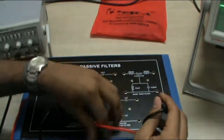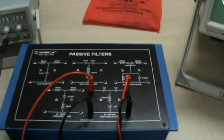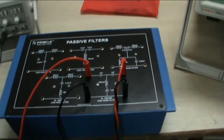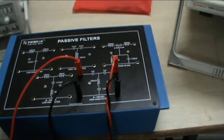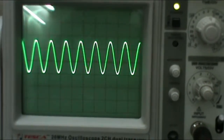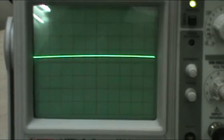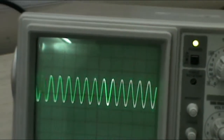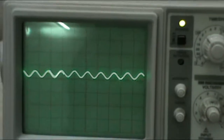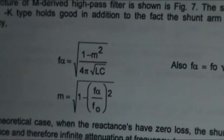Now we move on to our last circuit: M-derived high pass filter. The M-derived high pass filter will pass the high frequencies and block the lower frequencies, but still at the lower frequency it will give a certain sine wave — it will not become a complete straight line. It will pass the high frequencies, as you can see, with approximately the same amplitude. When I decrease my frequency, the amplitude of the sine wave is decreasing, but it is still passing a sine wave and not becoming null. This is the function of M-derived high pass filter. Calculate the cutoff frequency of this filter, and then through the given formulas in the lab manual, calculate the desired variables which are required.